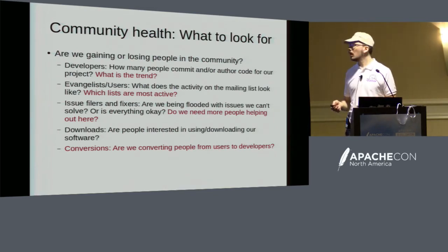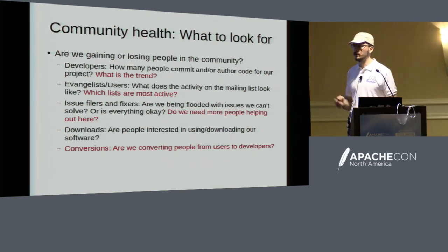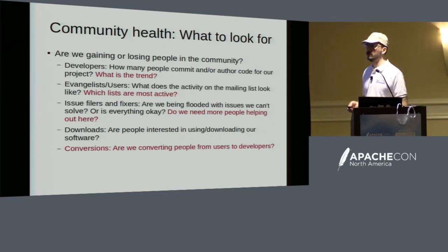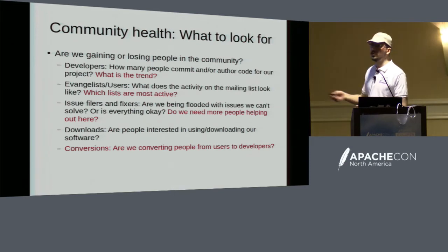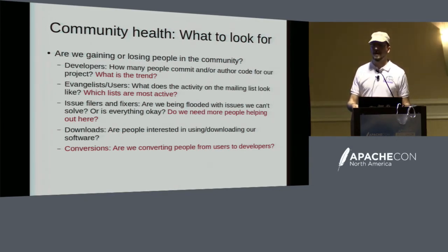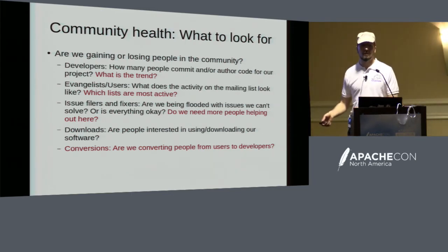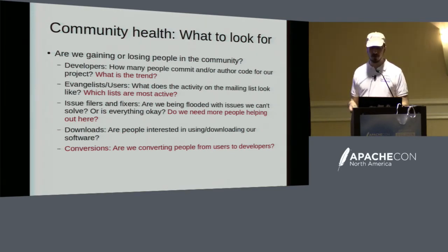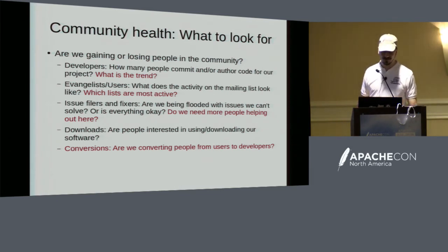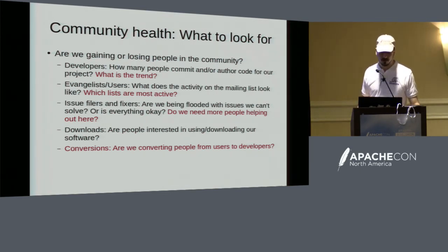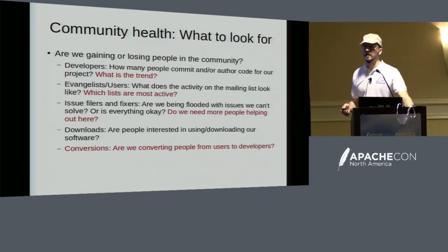Are we gaining or losing people? You can see this on Snoot — how many people commit, how many author code. There's a difference between those two. What is the trend? On the user list versus the dev list: if the user list is more active than the dev list, that's usually a good sign you have a lot of users. If you only have activity on the dev list, you're making a lot of code but not providing it to anyone. Are tickets being closed or just open? Do we need more people helping out? It's a good indicator of whether we need to do outreach to the community.